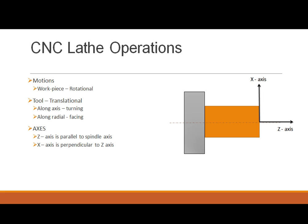In milling machines, the workpiece remains stationary, the tool rotates about itself and also translates about the workpiece to machine it. The types of operations include drilling, tapping, boring, contour milling, side milling, pocket milling, slot milling, and face milling.